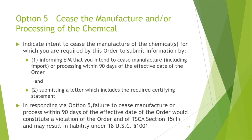Option 5 — cease manufacture or processing of the chemical. You must inform EPA of your company's intent to cease the manufacture and/or processing of the chemicals for which you are required by this order to submit information, by informing EPA that you intend to cease manufacture, including import or processing, within 90 days of the effective date of the order, and you must submit a letter which includes the required certifying statement. Failure to cease manufacture or processing of the subject chemical within 90 days of the effective date of the order would constitute a violation of the order and of TSCA Section 15(1), and could result in liability under 18 U.S.C. Section 1001.